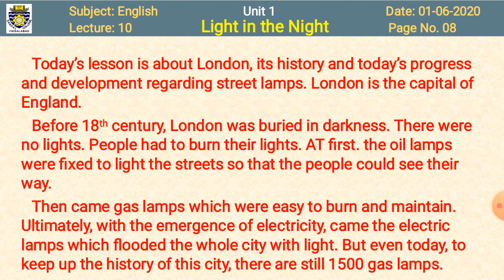Before starting the lesson, I would give you the summary of the whole lesson. Today's lesson, 'Light in the Night', is about London — its history and today's progress and development regarding street lamps. London is the capital of England. Before the 18th century, London was buried in darkness. There were no lights. People had to burn their own lights. First, oil lamps were fixed to light the streets. Then came gas lamps, which were easy to burn and maintain. Ultimately, with the emergence of electricity, electric lamps flooded the whole city with light. But even today, to keep up the history of this city, there are still 1500 gas lamps.